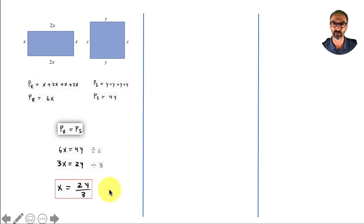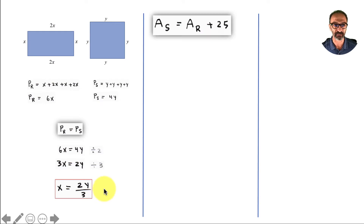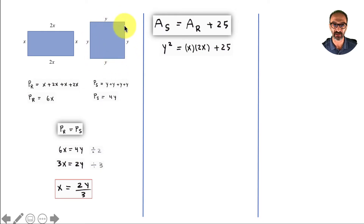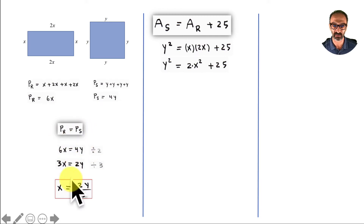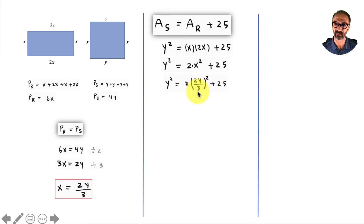Now the second piece of information gives me the other equation: the area of the square is 25 more than the area of the rectangle. The area of the rectangle is width times length — x times 2x. The area of the square is y times y, which is y squared. Now I will use the expression for x that we found from the first equation to substitute right here — so instead of x, I'm going to write 2y over 3 and use algebra to simplify.